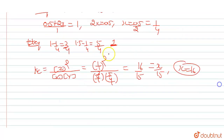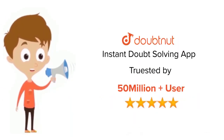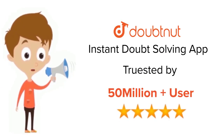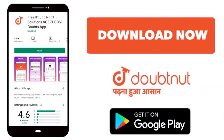So the final answer for the question is x equals 16. Thank you. For class 6 to 12, IIT JEE and NEET level, trusted by more than five crore students, download DoubtNet today.